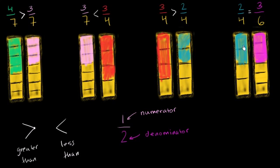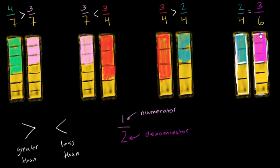As you can see here, they're both filling in half of the whole. If we draw the whole and split it into only two sections, we are shading in exactly one out of two sections. So 2 fourths equals 3 sixths, and they both equal 1 half: 1 half is equal to 2 fourths is equal to 3 sixths.